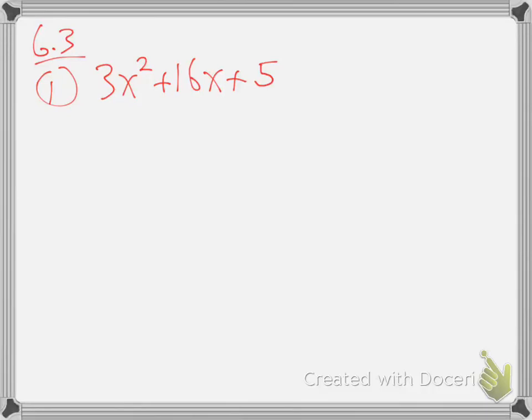Factor that one. Why don't you try? Let me just let you try first off. Let's try it together. What's the first step in every factory problem? GCF. What's in common? What do they all have in common? Nothing, right? There's no number that goes into 3, 16, and 5. Do they all have an X? No. So there's no GCF.